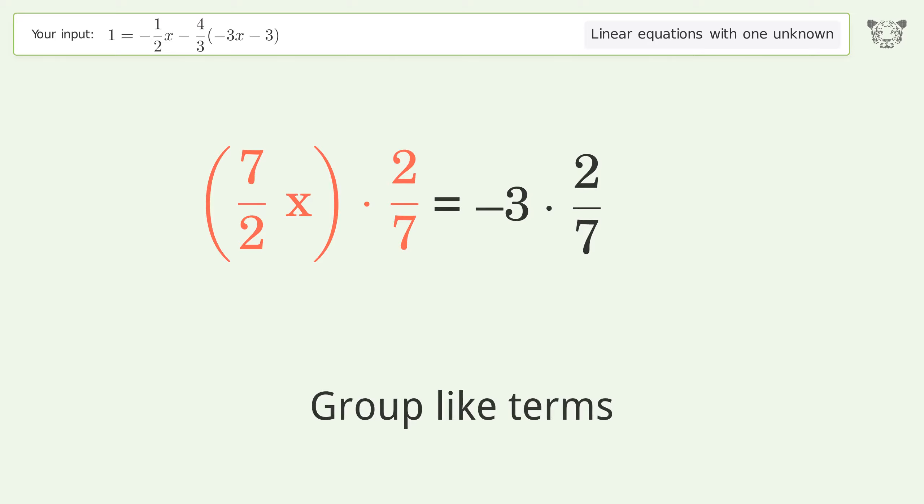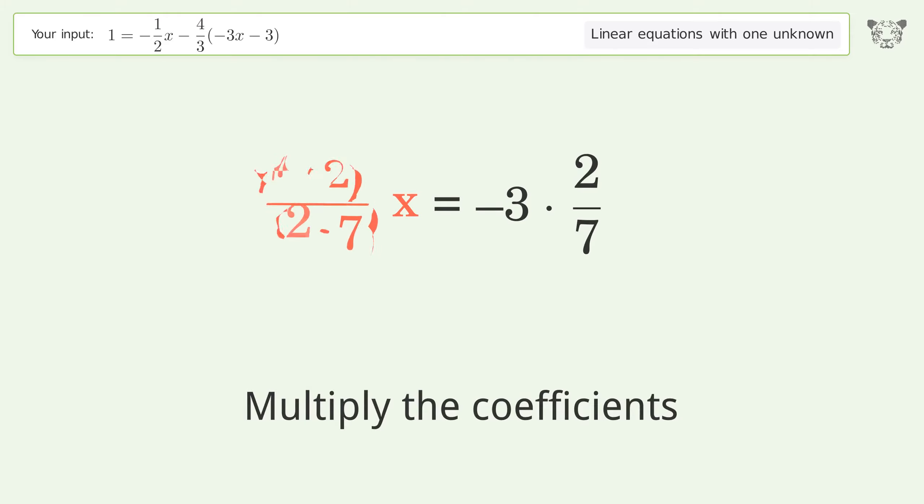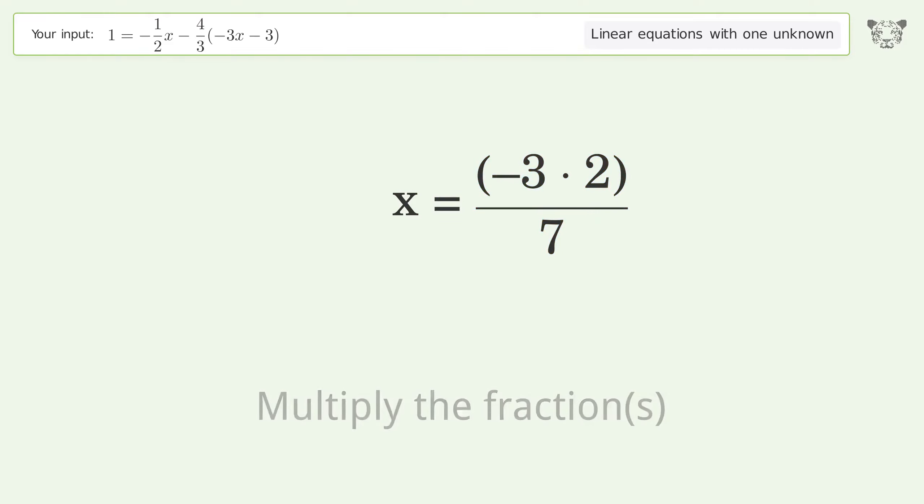Group like terms. Multiply the coefficients. Simplify the fraction. Multiply the fractions. Simplify the arithmetic. And so the final result is x equals negative 6 over 7.